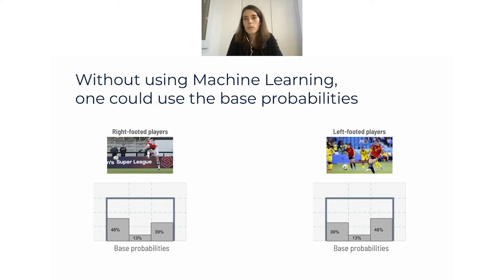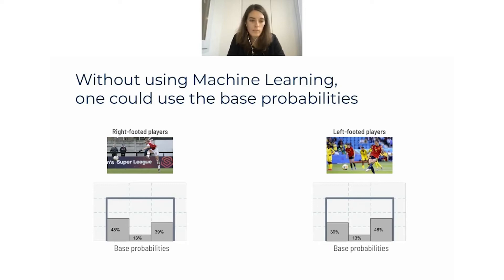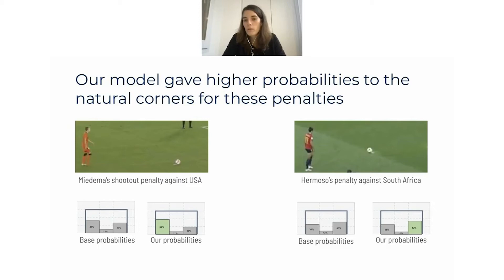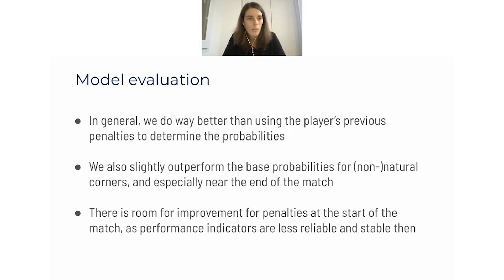In general, players tend to aim more often to the natural corner — for right-footed players it's more often to the left, and for left-footed players more often to the right. These are the base probabilities: 48% of penalties go to the natural corner. Comparing our model probabilities to the base probabilities, our model added an additional 11% for Miedema's penalty to her natural corner. Using these probabilities smartly, you can get an edge over just using the most common natural corner baseline. Using only the player's previous penalties works worse than our approach.